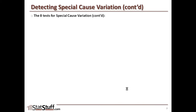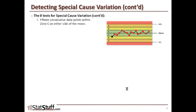The seventh test: 15 consecutive data points are all within Zone C on either side of the mean. We might think that's a good thing — seeing all that bouncing back and forth within one standard deviation of the mean.